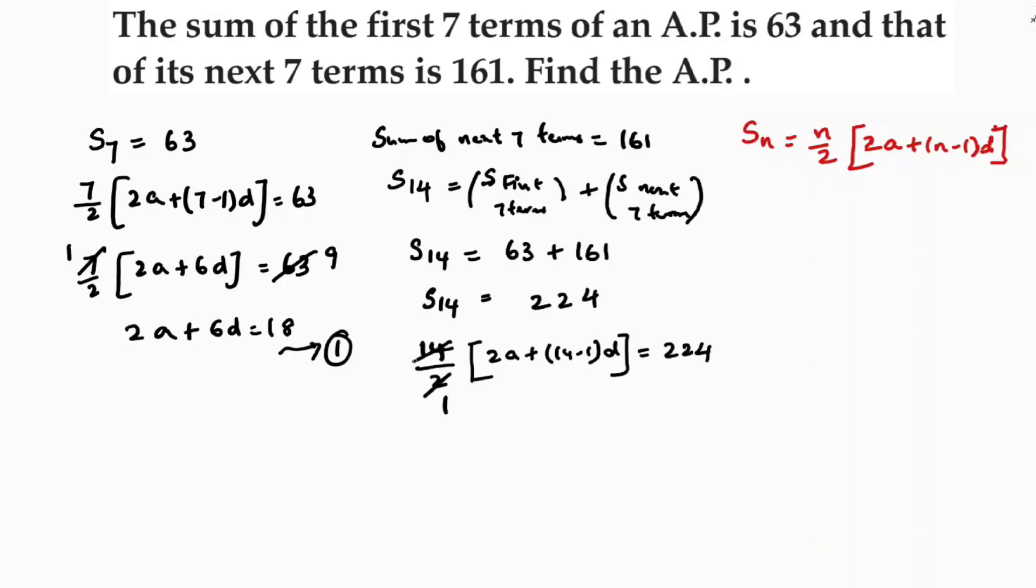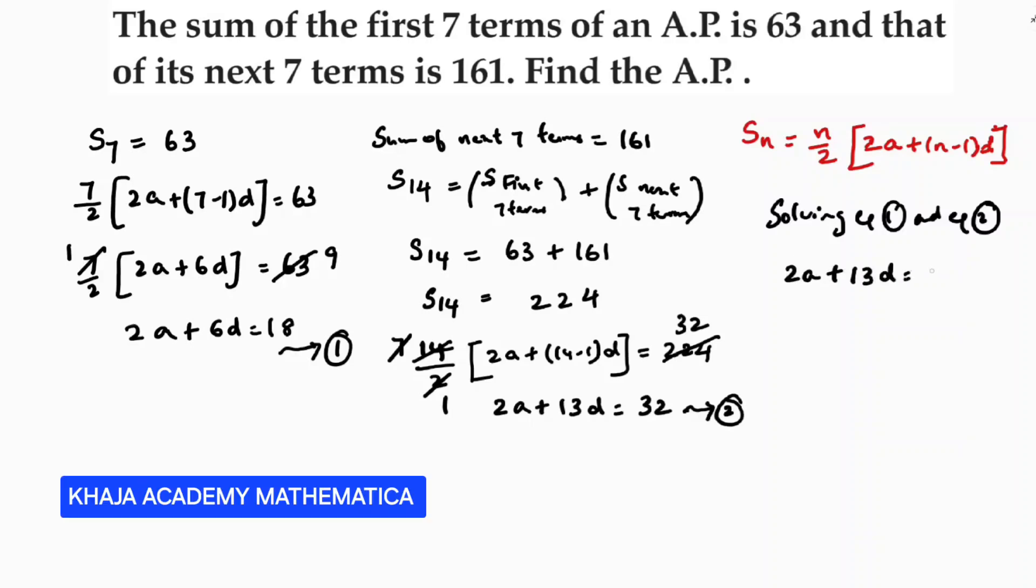Here, 14 by 2, 2a plus 13d is 224. 2 times 7 is 14, 7 times 32. So here 2a plus 13d is 32. This is equation 2. Now I need to solve 1 and 2.